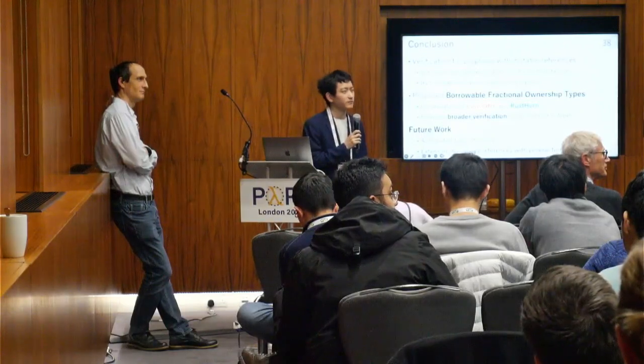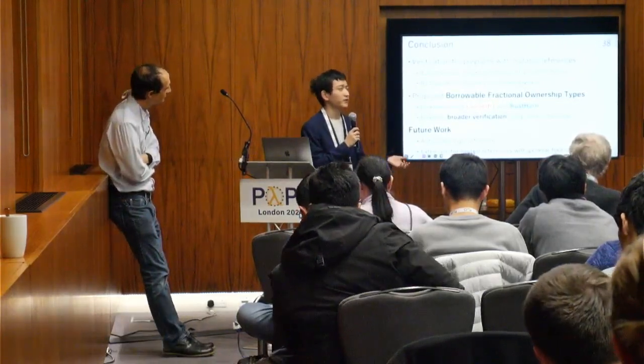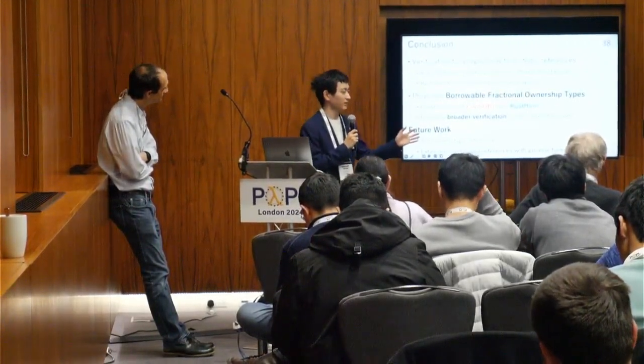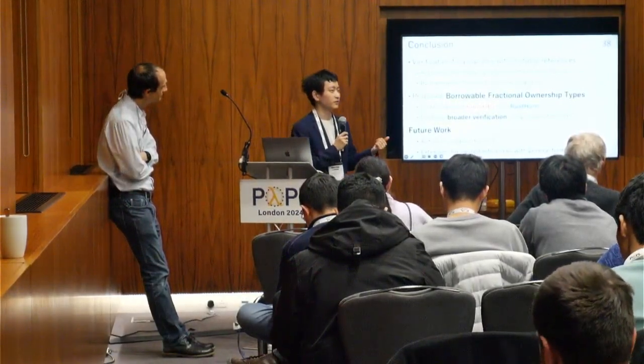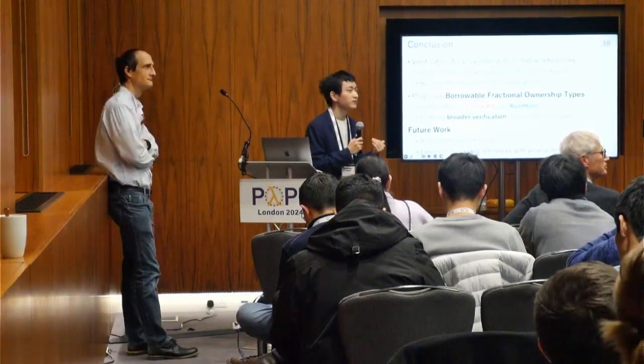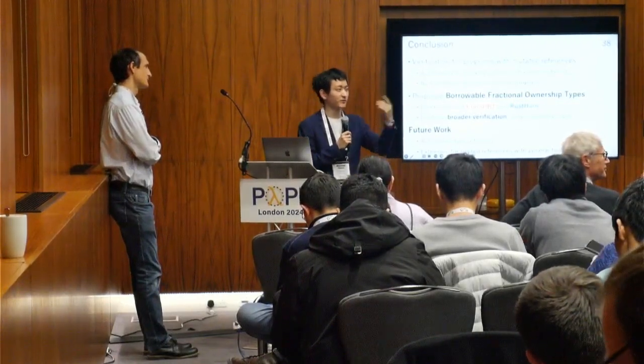A final question raised whether this approach captures much of what unsafe Rust is used for — in particular, getting around proving mutability — and how much of the standard library could be formally verified using this method. The speaker responded that this is potentially applicable to unsafe Rust, but that it depends on the program being verified, and suggested continuing the discussion after the talk.